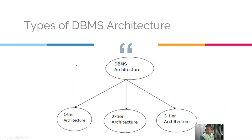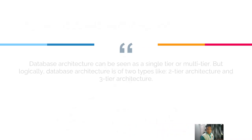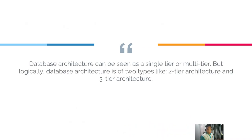These are the DBMS architectures: first is the one-tier architecture, second is the two-tier architecture, and third is the three-tier architecture. These are the three types of architecture in the database that we are going to study. Database architecture can be seen as single-tier or multi-tier, but logically database architecture is two types: two-tier architecture and three-tier architecture.